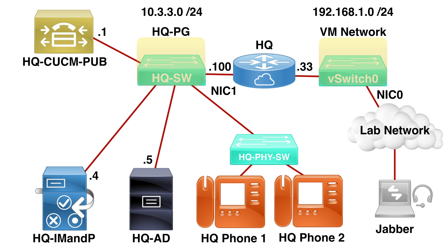Currently on the VMware server we have two virtual machines: the HQ router (CSR1000V) and the Communications Manager server. Let's add a third virtual machine - that's going to be our IM and Presence server. I've already uploaded the ISO installation file to the datastore on our ESXi server, so let's create a virtual machine and install the Cisco IM and Presence server.